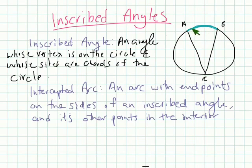The intercepted arc I've highlighted in blue. An intercepted arc is an arc with endpoints, so A and B, that are on the sides of the inscribed angle and other points in the interior. Basically, an inscribed angle, the arc formed by the end of the chord segments, is your intercepted arc.